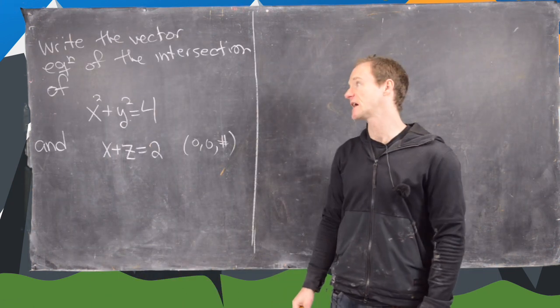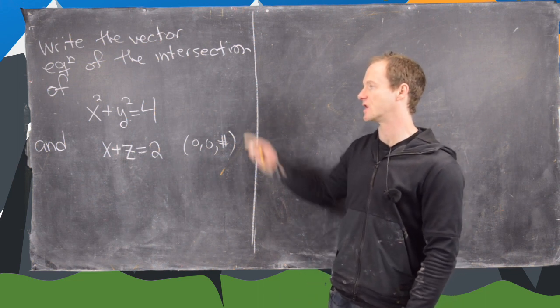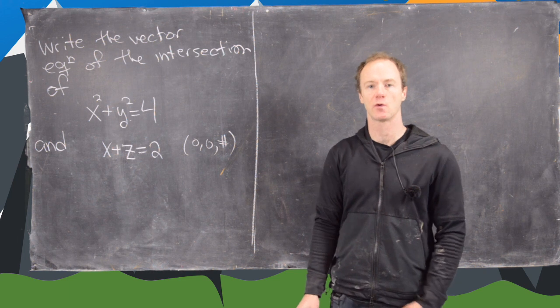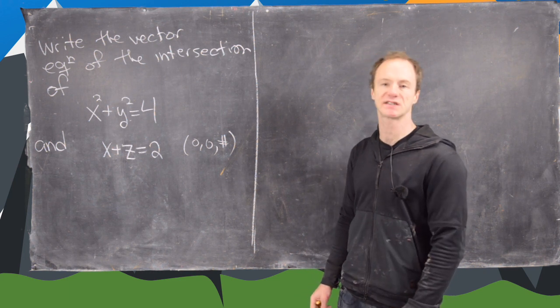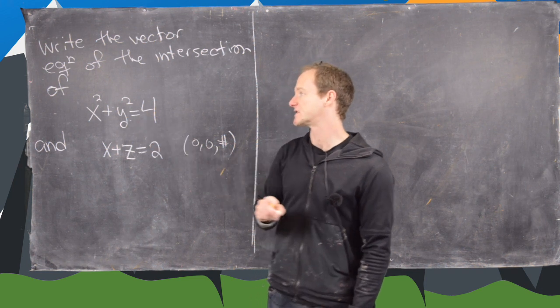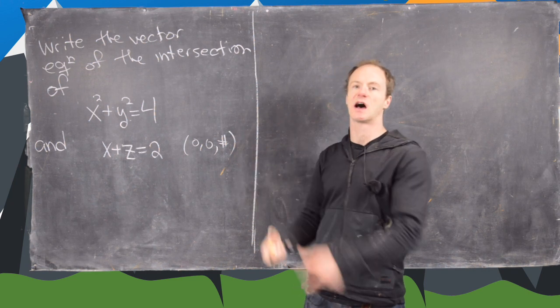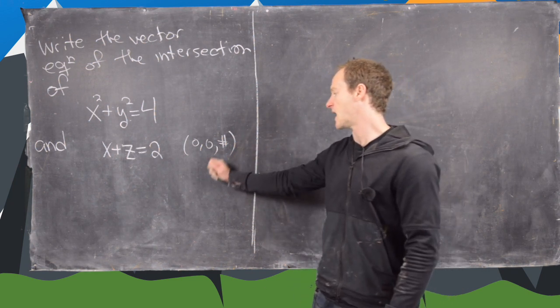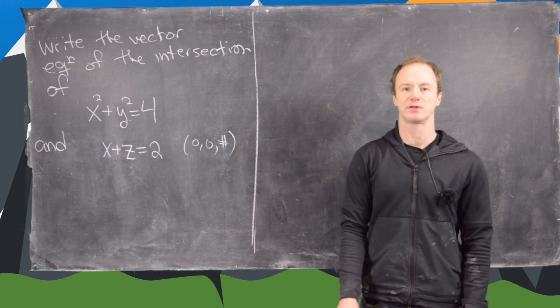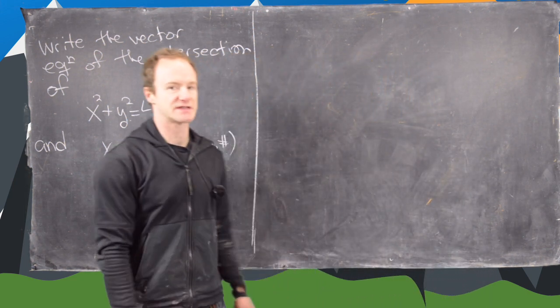So for our next example, we're going to write the vector equation of the curve of intersection of x squared plus y squared equals 4. So that's a cylinder like we discussed before. Notice for every value z, we get a circle, x squared plus y squared equals 4. So that means we've got infinitely many circles on top of each other giving us a cylinder. And then we've got this plane, x plus z equals 2. So let's get a sketch of the situation.